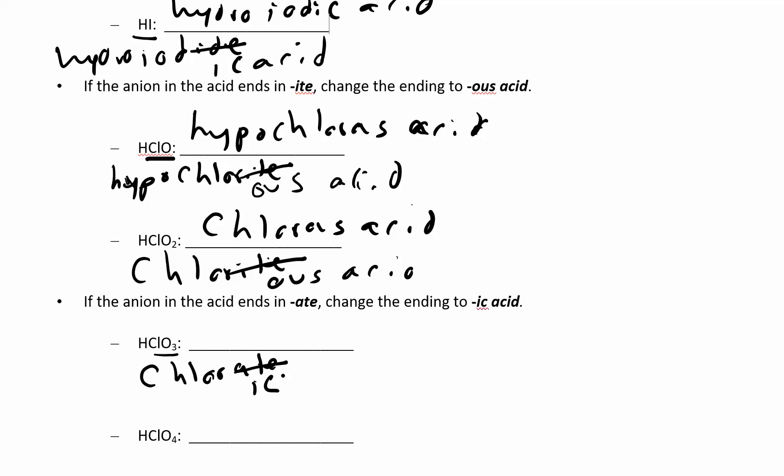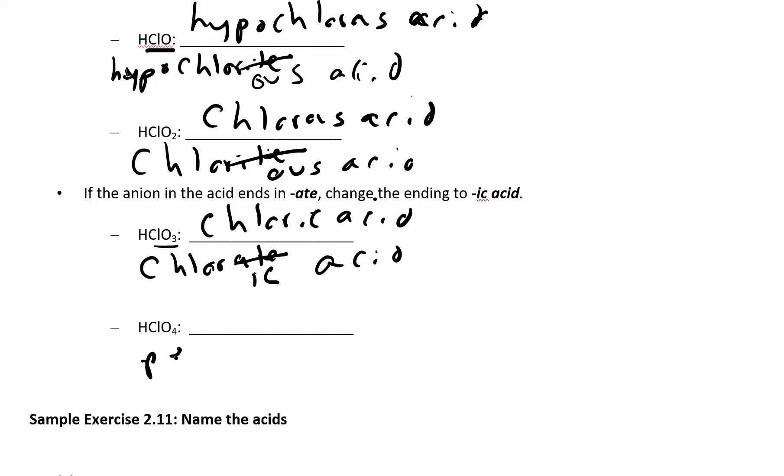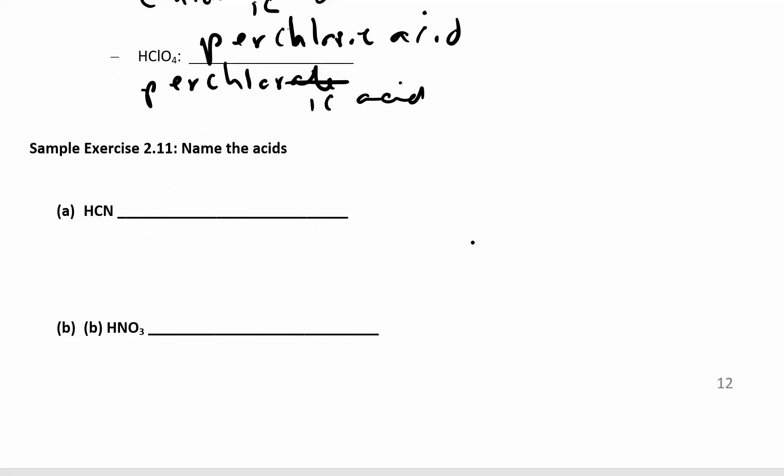So you have two that end in -ic acid, and the difference is if the anion ended in -ide then you add a prefix with the hydro, which usually happens when you don't have any oxygens. Here we have chloric acid, and then this is the perchlorate ion. You drop that -ate and make it -ic acid, and now you have perchloric acid.